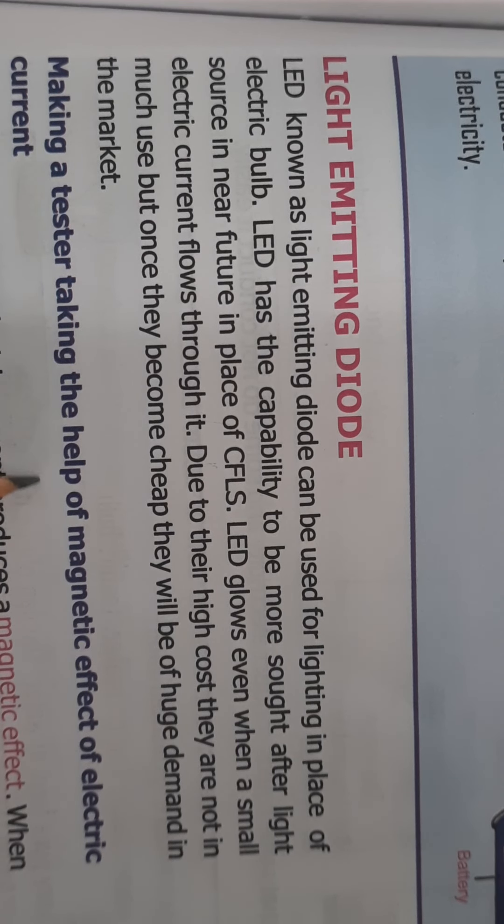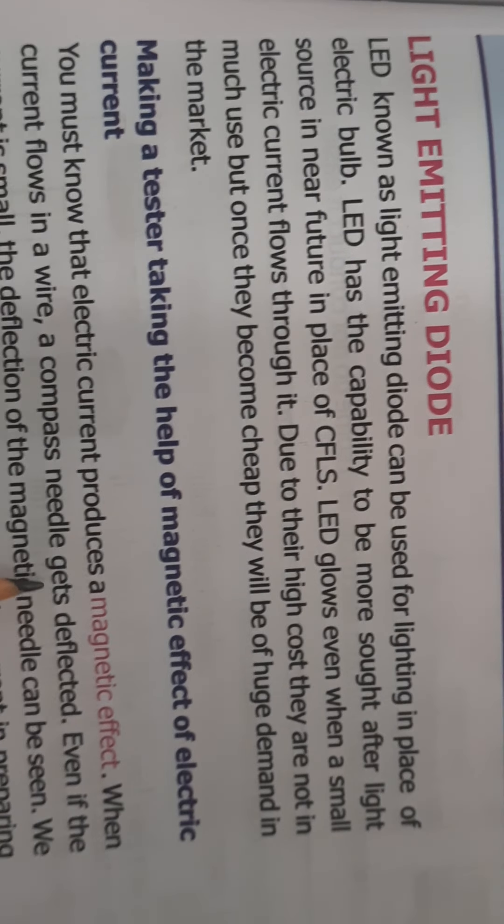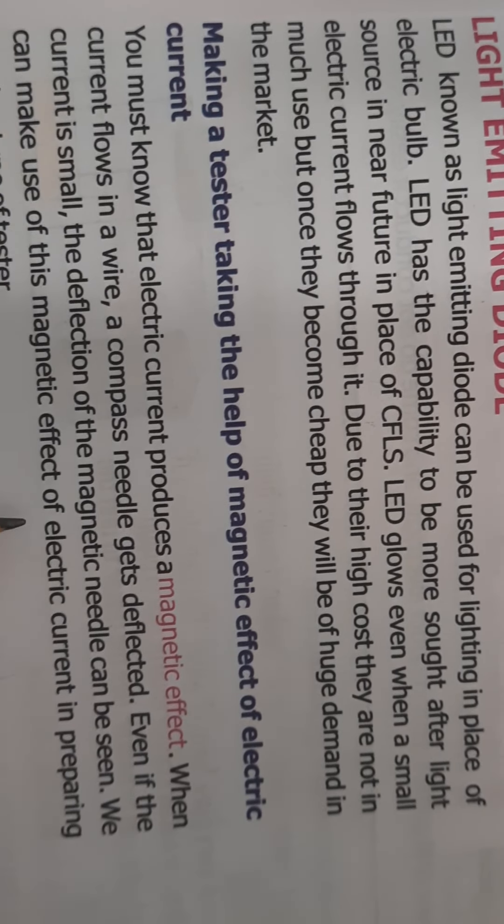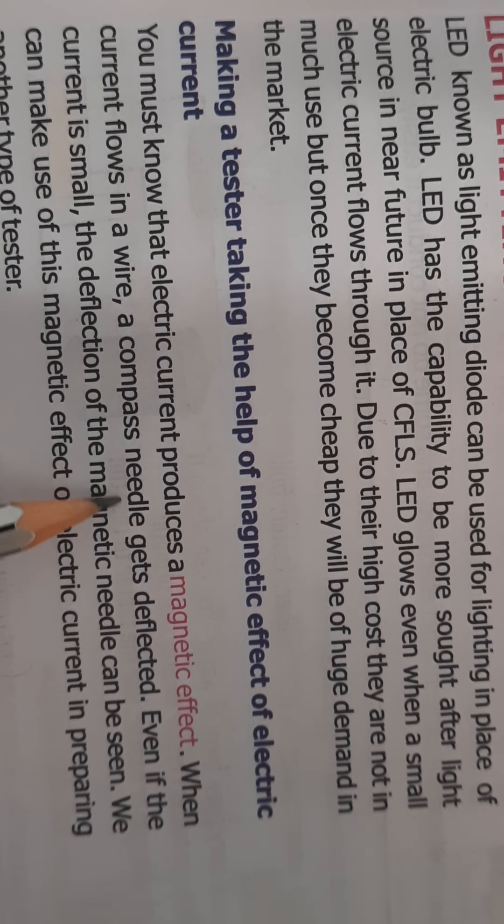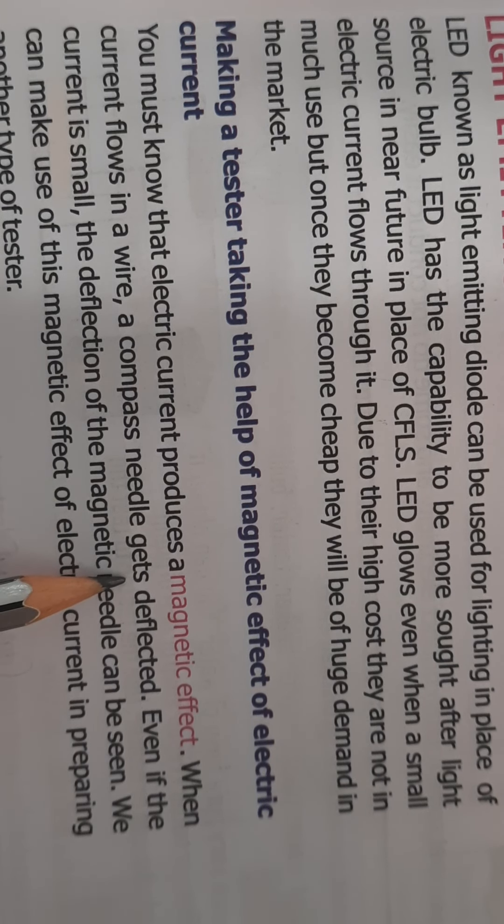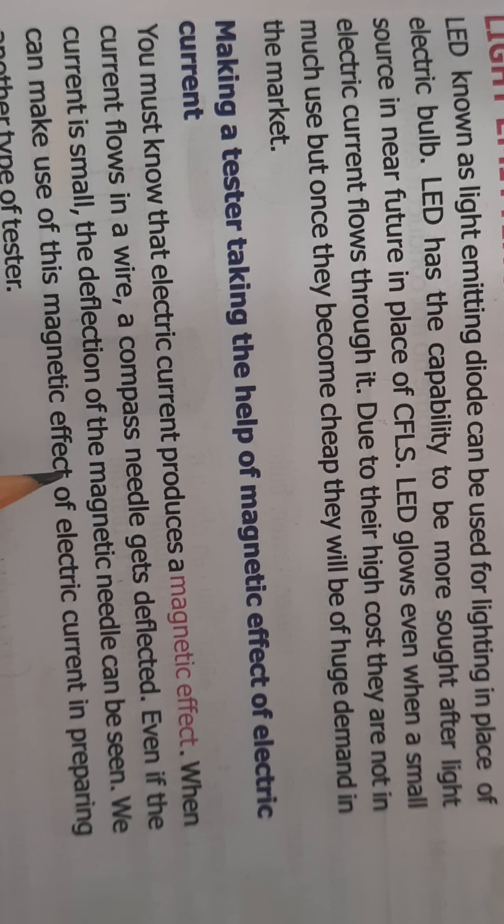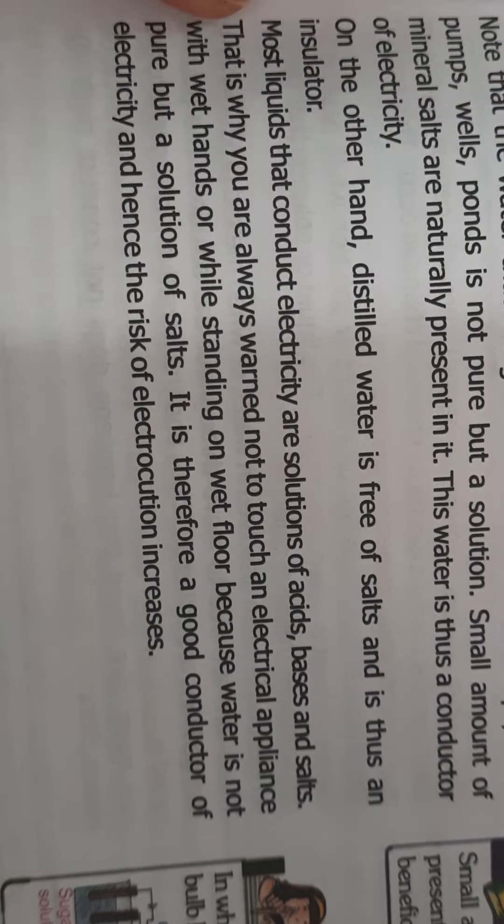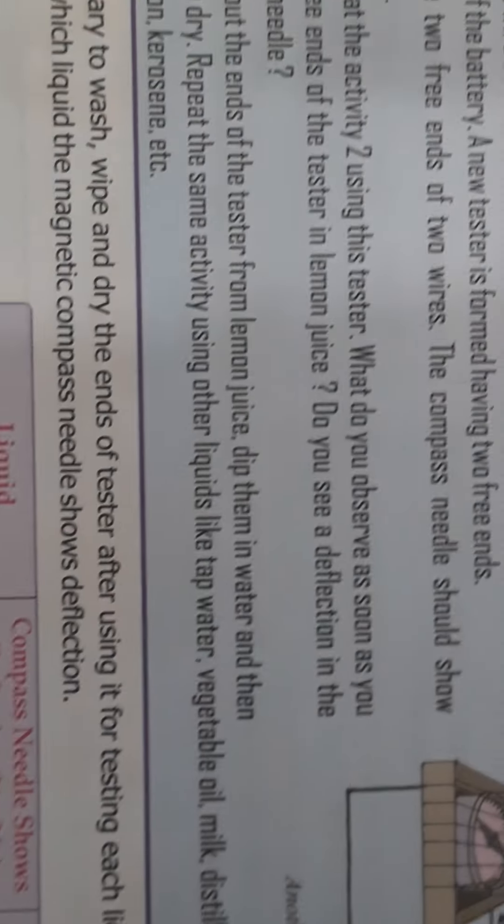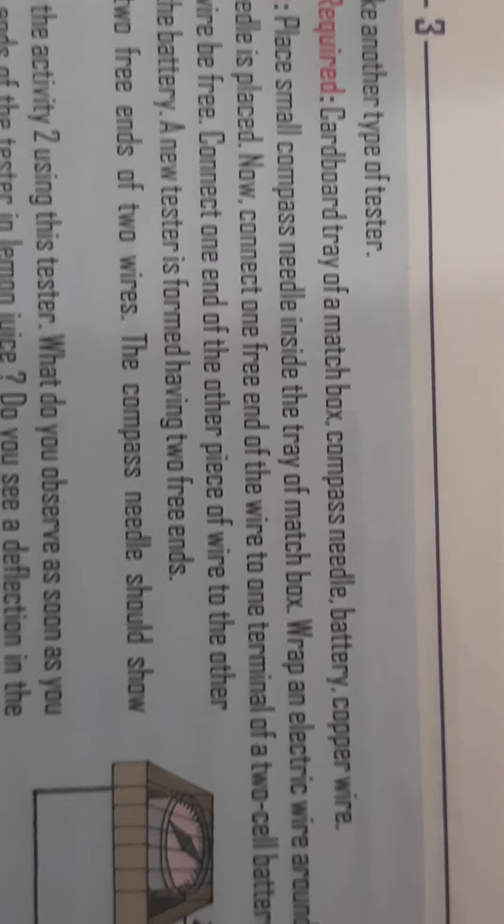Then you can make a tester with the help of magnetic effect of electric current. You all know that by magnetic effect, electric current can be produced. You have studied in class 7th about this, that when current flows in a wire, a compass needle will get deflected. Even if there is a very small current, the magnetic needle or the compass needle will deflect. So you can make another type of tester to test various liquids.